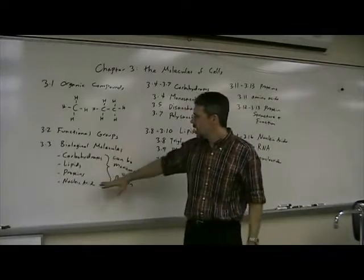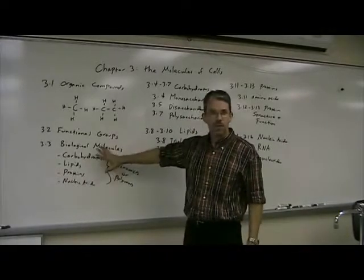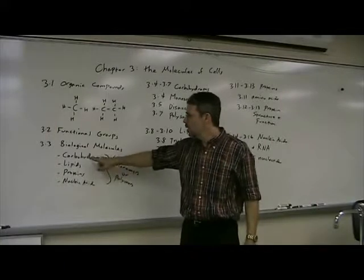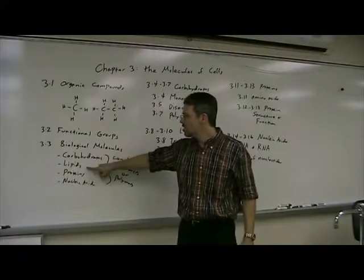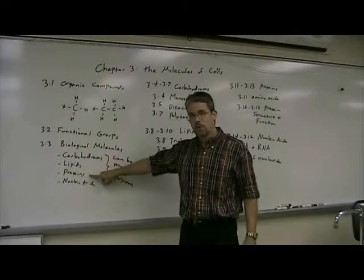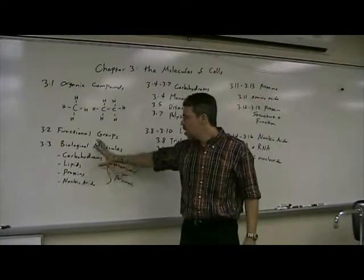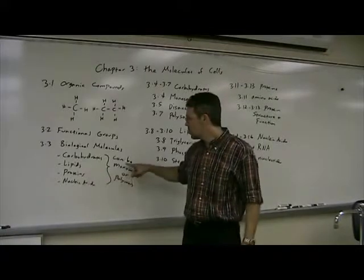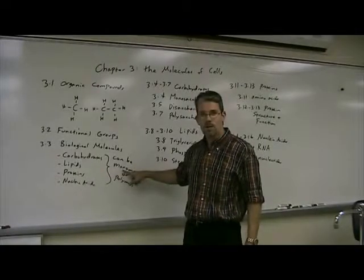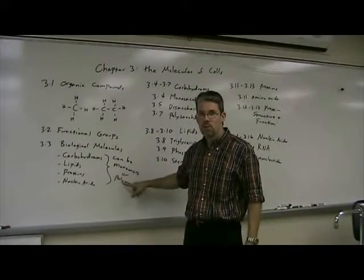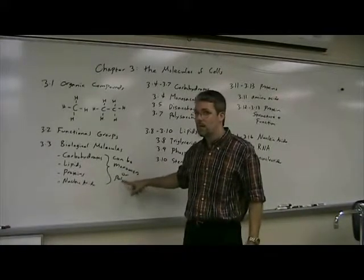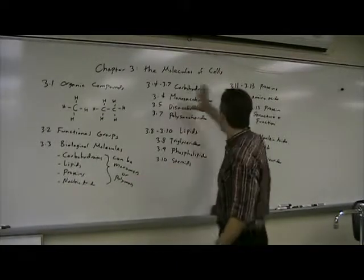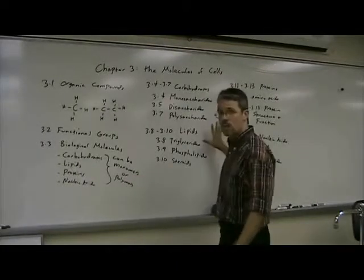Cutting to the chase: biological molecules fall into four categories in the body — carbohydrates, lipids, proteins, and nucleic acids. All four categories can exist as small molecules such as monomers, or can be put together into big molecules such as polymers.